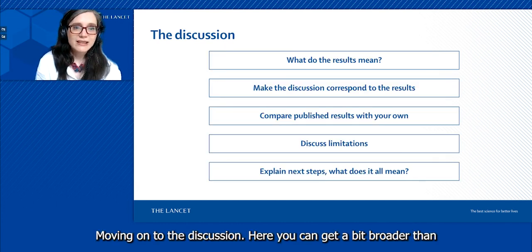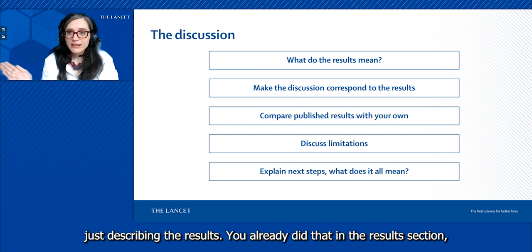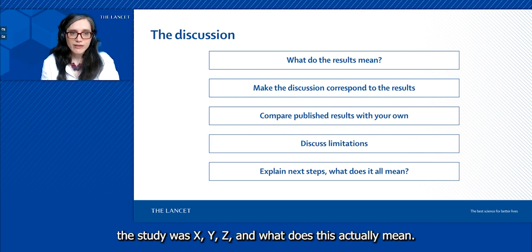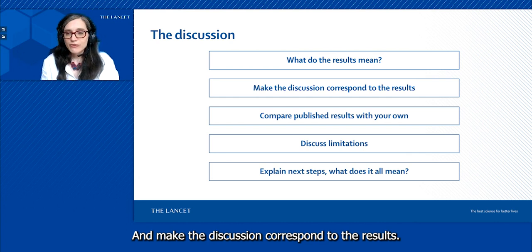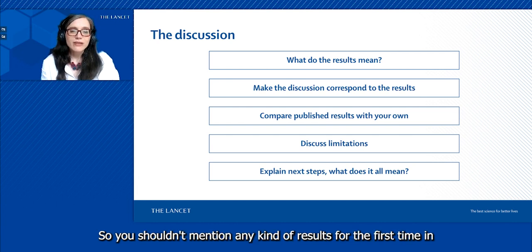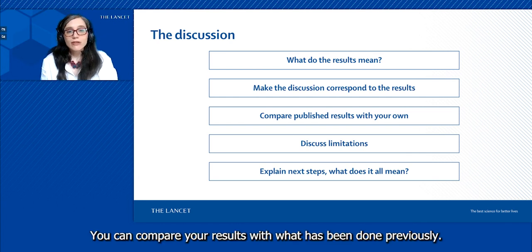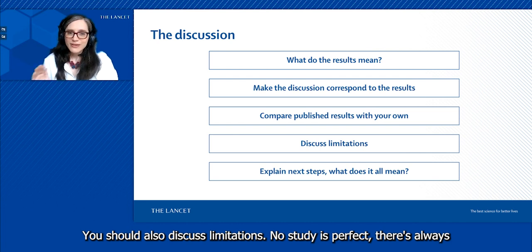Moving on to the discussion. Here you can get a bit broader than just describing the results. You already did that in the results section, so you don't need to repeat all of this. You can say the main finding of the study was X, Y, Z, and what does this actually mean? What does it mean for the field, for the patients, for future research? Make the discussion correspond to the results. You can compare your results with what's been done previously. Did you find the same? Did you find something else?